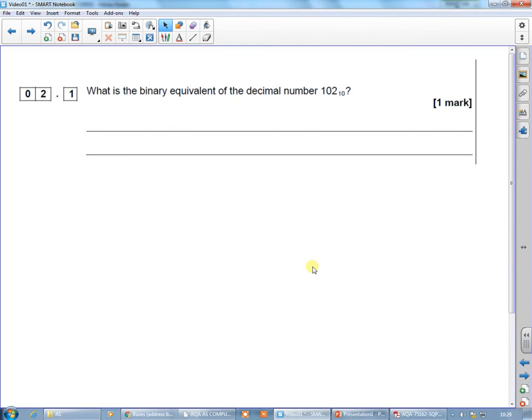So what is the binary equivalent of the decimal number 102? So the first thing I need to do is to work out that for this number, I need to work out what the binary is.